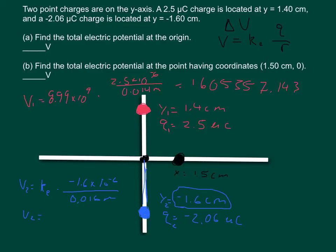V2 should equal approximately negative 1,157,462.5. And so to get the electrical potential at our origin we just simply add V1 plus V2. And you should get the electrical potential at the origin is 447,894.64 volts.